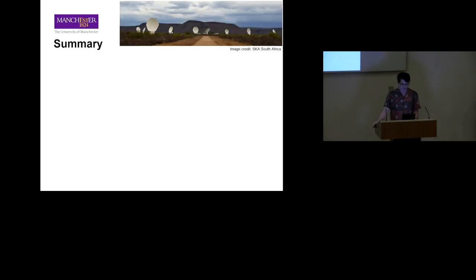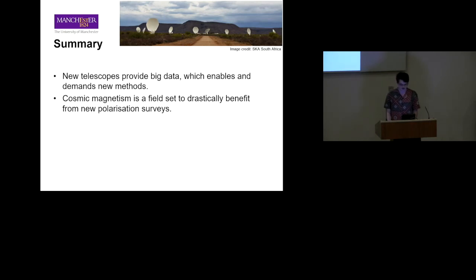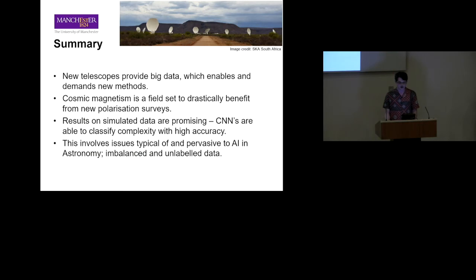In summary, new telescopes provide big data which enables and demands new methods—hence why a lot of us are here. Cosmic magnetism is a field set to drastically benefit from new polarization surveys which also need these new machine learning methods. Results on simulated data are very promising—CNNs are able to classify complexity with a high level of accuracy. I note that the issues faced in this research are ones that are faced through many regions of astronomy, so well worth paying attention to imbalanced and unlabeled data. The future is interesting in this field, so hopefully we'll have some interesting results in upcoming surveys very soon. Thanks very much for listening.